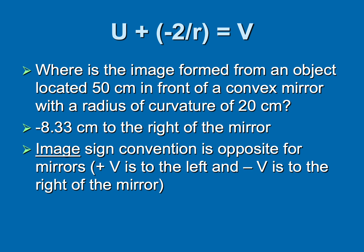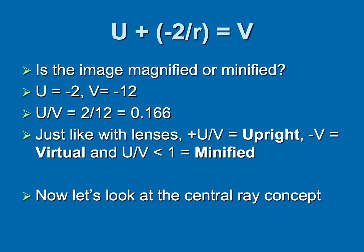Is it in front or behind the mirror? We see the answer here of minus 8.33 to the right of the mirror. But what's really important is that the image sign convention is opposite for mirrors than it is for lenses. Plus v is to the left, minus v is to the right of the mirror or inside the mirror. So whenever we are looking at our passenger side mirror in our vehicle, that is a convex mirror. The image is minified, which is why you have that little sign that objects may be closer than they appear.